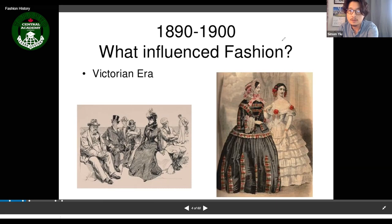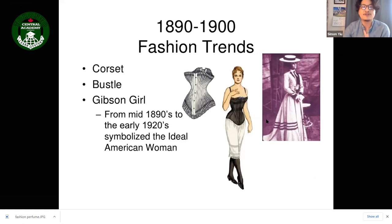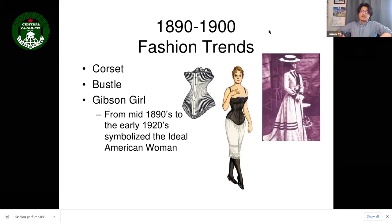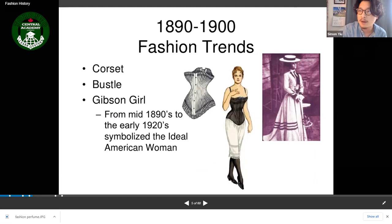Looking at fashion trends of the 1890s: corsets were very popular — something that holds your stomach in. There were also bustles, and something called the Gibson Girl, which was very popular at that time.